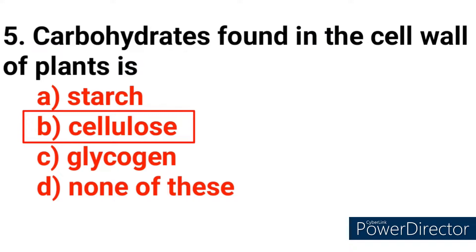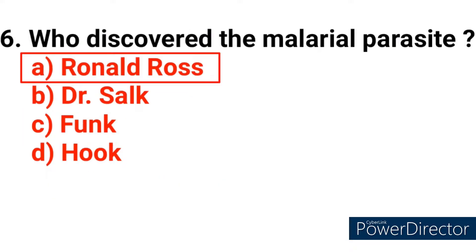Question number 5: Carbohydrates found in the cell wall of plants is? The correct answer is option B — cellulose. Question number 6: Who discovered the malarial parasite? Answer option A — Ronald Ross.